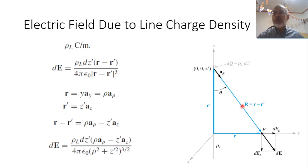The incremental electric field is: ΔE = ΔQ / (4πε₀ |r − r′|³) multiplied by the vector (r − r′), where ΔQ = ρL ΔZ′. This gives the incremental electric field due to an incremental length along the infinite line charge.